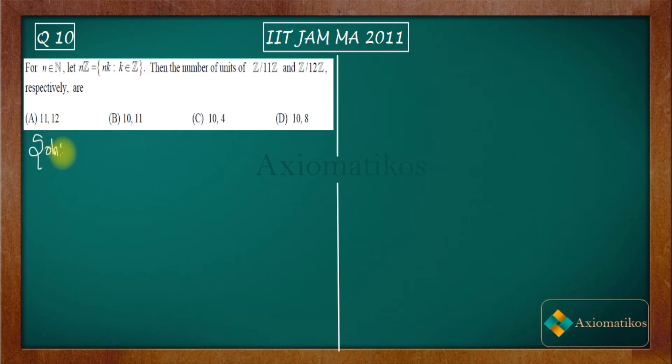Firstly, I want to tell you that Z/nZ is actually isomorphic to Zn, and the operation is addition modulo n.